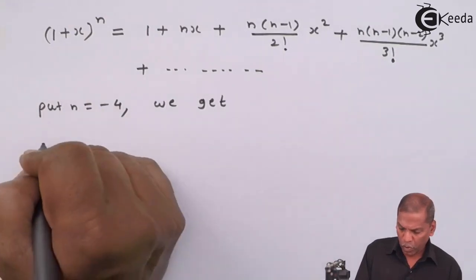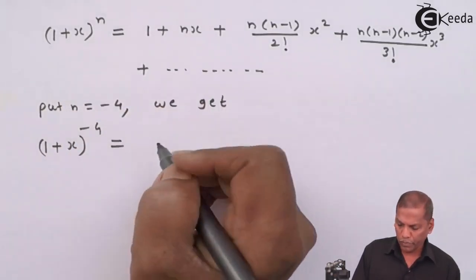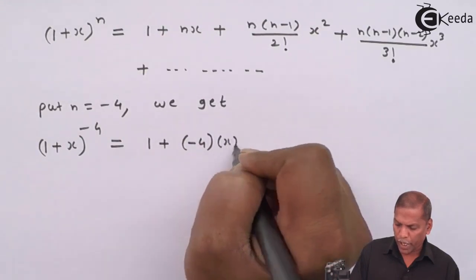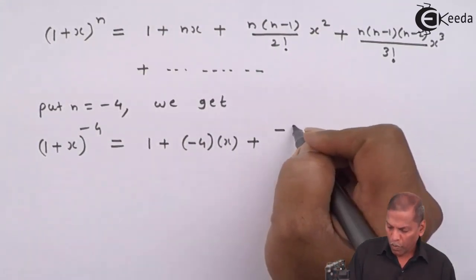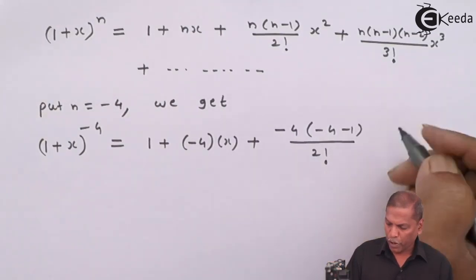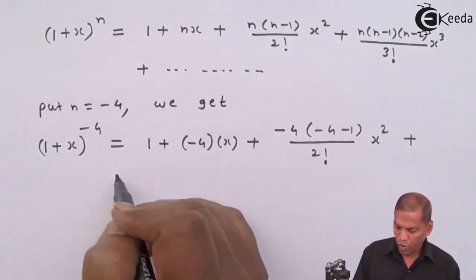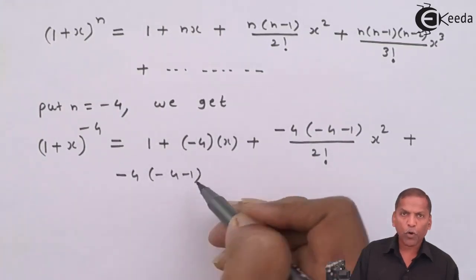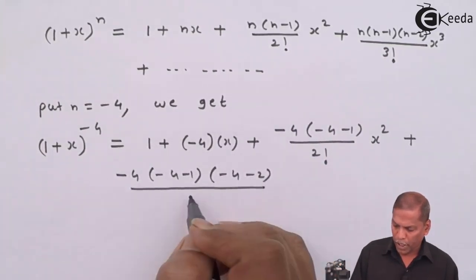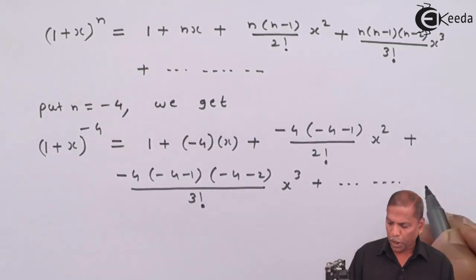We get (1+x) raised to minus 4 equals 1 plus minus 4 times x plus minus 4 times (minus 4 minus 1) upon 2 factorial times x squared plus minus 4 times (minus 4 minus 1) times (minus 4 minus 2) divided by 3 factorial times x cube plus continuing on.